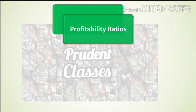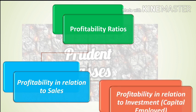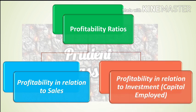Now we will talk about how many types of profitability ratios there are. If we talk about profitability ratios, they are divided into two parts: first, profitability in relation to sales; and second, profitability in relation to investment or capital employed. So the first part covers those ratios that are basically related to sales, and the second part covers ratios related to the investment or capital employed in the organization — the profit earned through that.